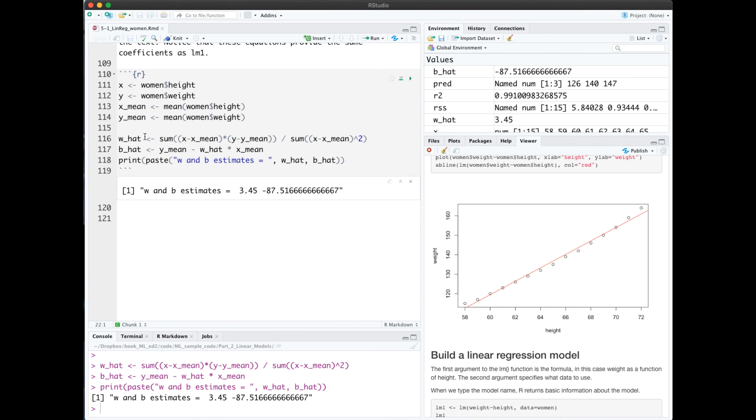So the last formula we looked at for w hat was the sum of x's minus the means times the y's minus the means all over the sum of the x's minus the means squared.